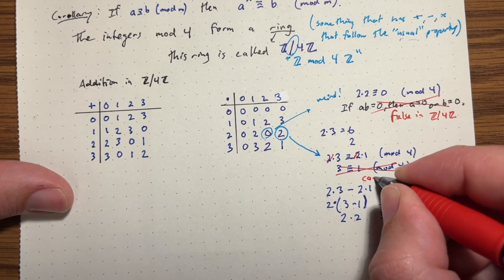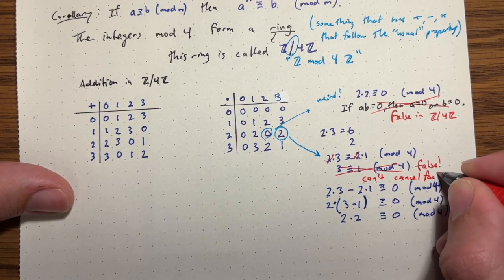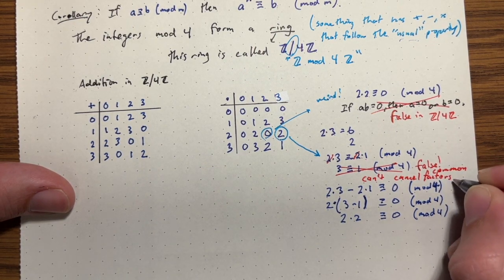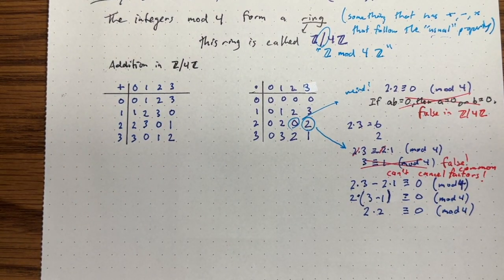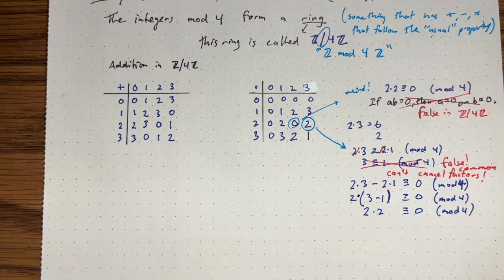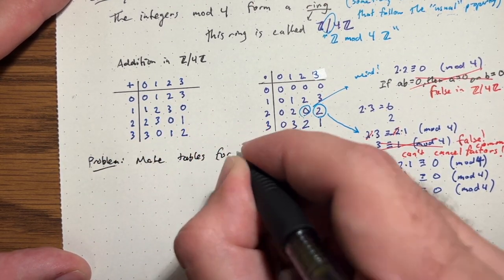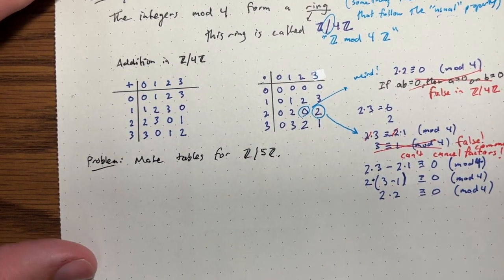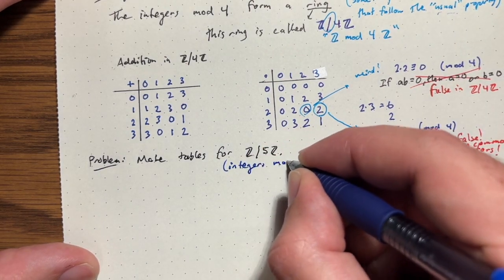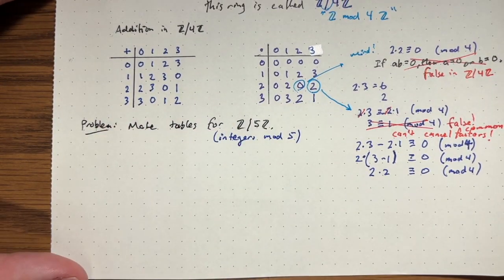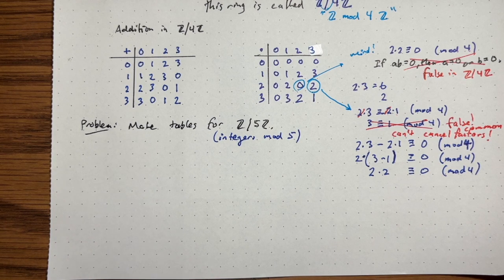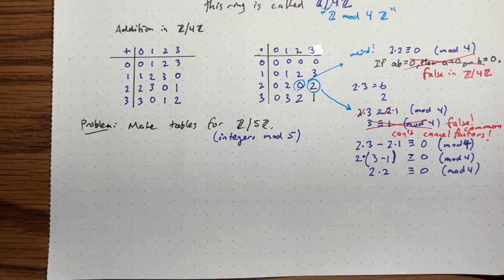Two times three equals six, which is congruent to 2 mod 4; three times three is congruent to 1 mod 4. Also note: if we had 2 times 3 congruent to 2 mod 4 and tried to cancel the 2s, we'd get 3 congruent to 1 mod 4 — which is false. So be very careful: you cannot cancel common factors in modular arithmetic. This weirdness is related to the zero-divisor issue — factoring shows 2 times (3 minus 1) equals 2 times 2 is congruent to 0, linking back to that problem.